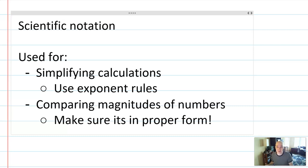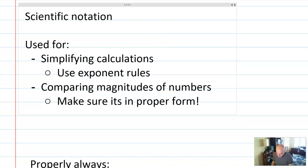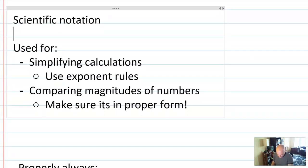Two, it's really good practice with your exponent rules. So when do you use scientific notation? Well, it's something that we use for two reasons. One is to simplify calculations using exponent rules, and the other is comparing the magnitudes or sizes of numbers easily. And that's why you have to make sure things are in proper form.